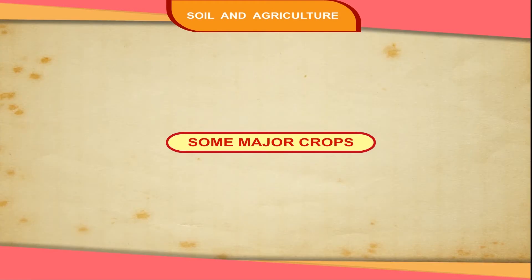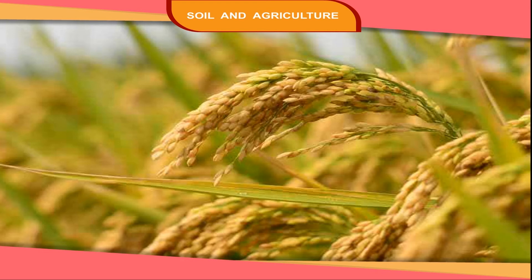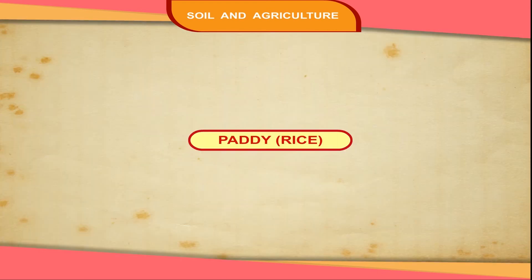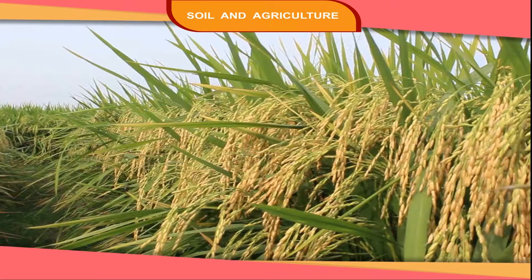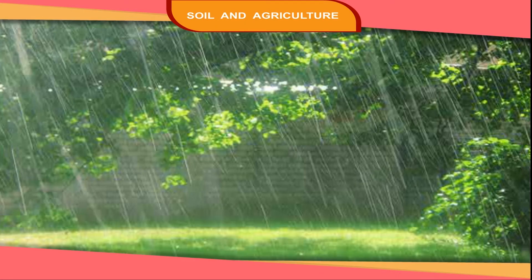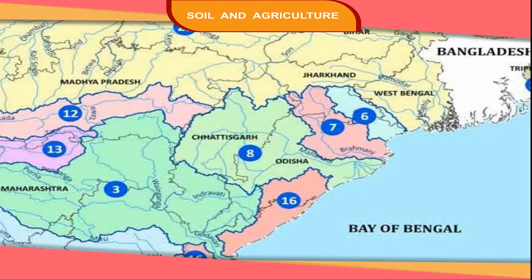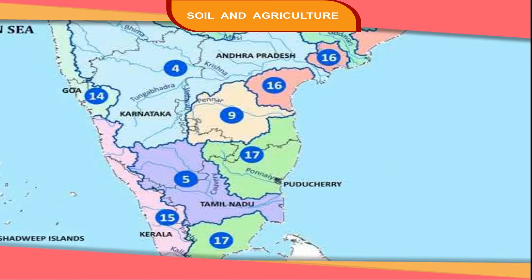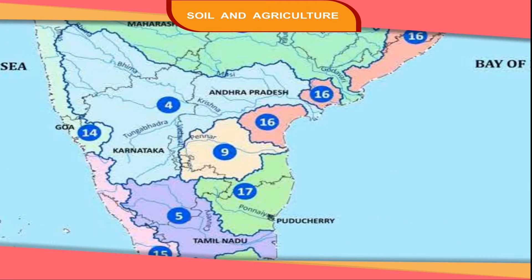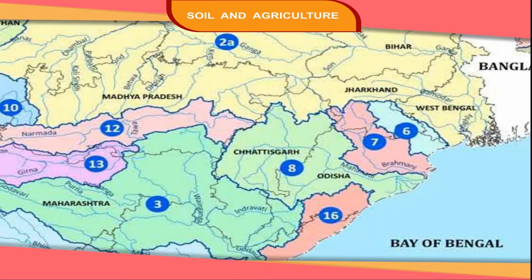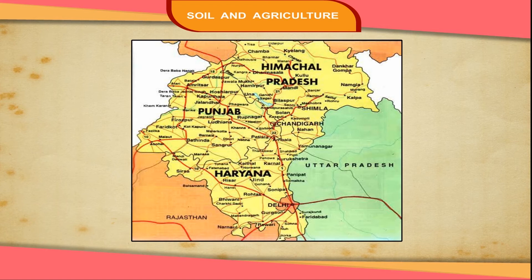Some major crops grown in our country are as follows. Paddy or rice is the main food crop of India. It is grown in the rainy season. West Bengal, Orissa, Tamil Nadu, Andhra Pradesh, Madhya Pradesh, Chhattisgarh and Jharkhand are the main producers of paddy. Now Punjab and Haryana are also growing paddy.